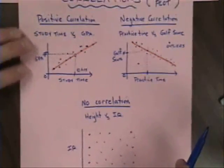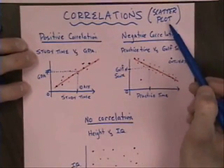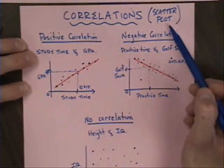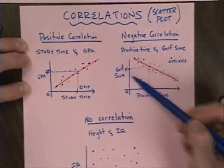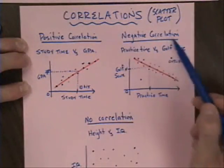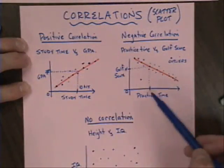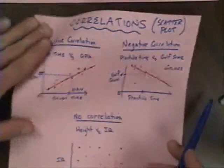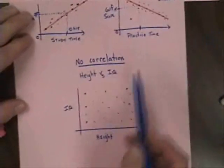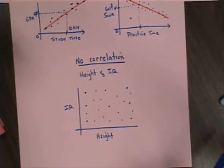So we reviewed the three basic kinds of correlations, which are usually associated with scatterplots. You've got your positive correlation with your trend line, your negative correlation with your trend line and your outliers, and your no correlation, which really cannot have a trend line because there's no trend to be observed.